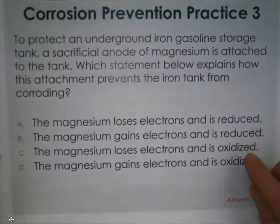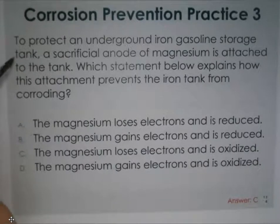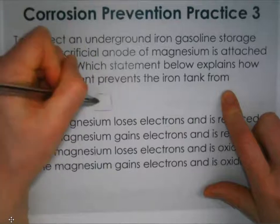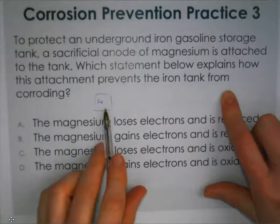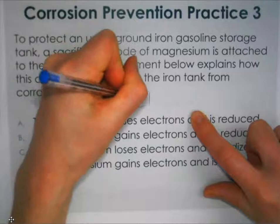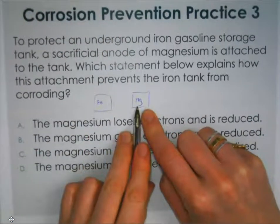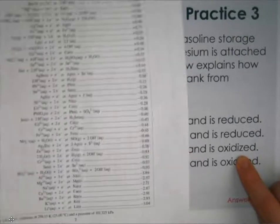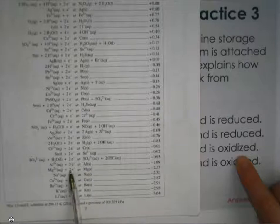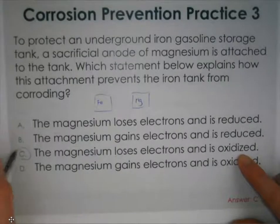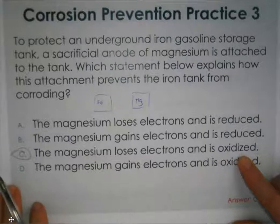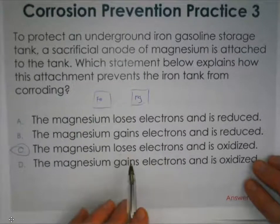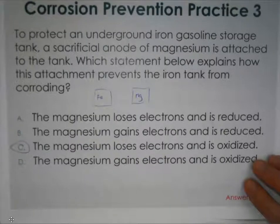To protect an underground iron gasoline storage tank, a sacrificial anode of magnesium is attached. Which statement explains how this prevents the iron from corroding? Because we don't want iron to be oxidized, we want magnesium to be oxidized instead. In that reaction, magnesium loses electrons — electrons appear as products — so the answer is C: the magnesium loses electrons and is oxidized. Whenever looking for a sacrificial anode, always find the stronger reducing agent that undergoes the oxidation we don't want the protected object to undergo.